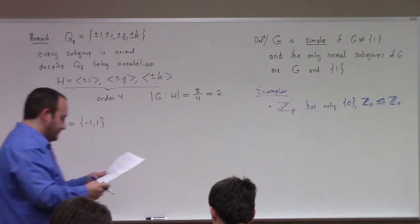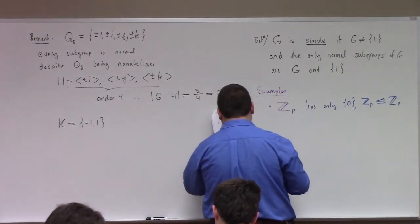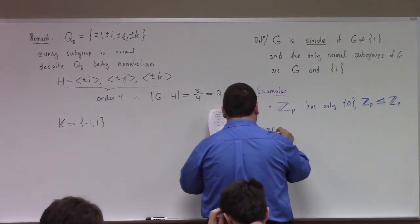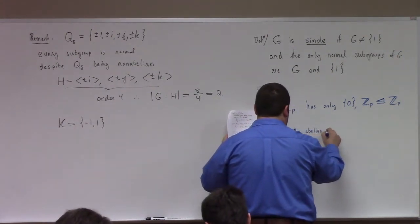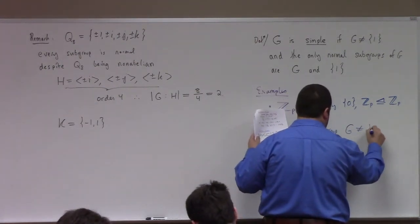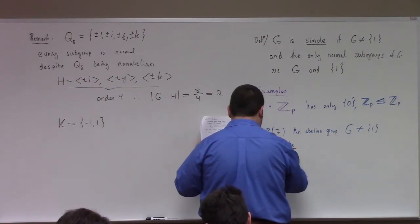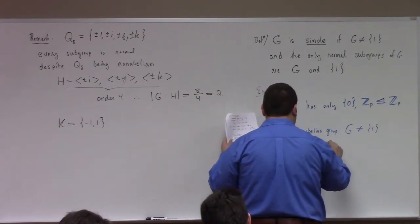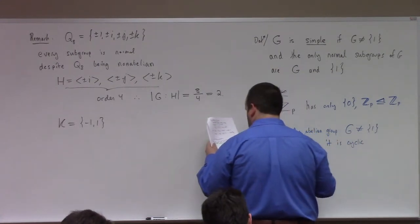Theorem 7 says: an abelian group G not equal to {1} is simple if and only if it is cyclic of prime order. I won't prove it, but half of this theorem we proved before. What this says is: if you're looking for abelian groups that are simple, the answer is exactly the cyclic groups of prime order.